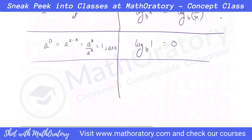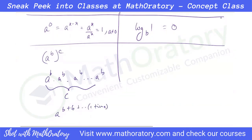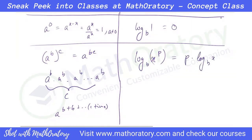Now let's get into the next property. The meaning of a to the power b, whole to the power c, is a to the power b multiplied c number of times. Each multiplication results in addition of powers, so you're effectively adding b plus b plus b, c times — that gives a to the power b times c. So if a log is raised to a power, since log itself is a power, the powers get multiplied. That gives us the log power rule.